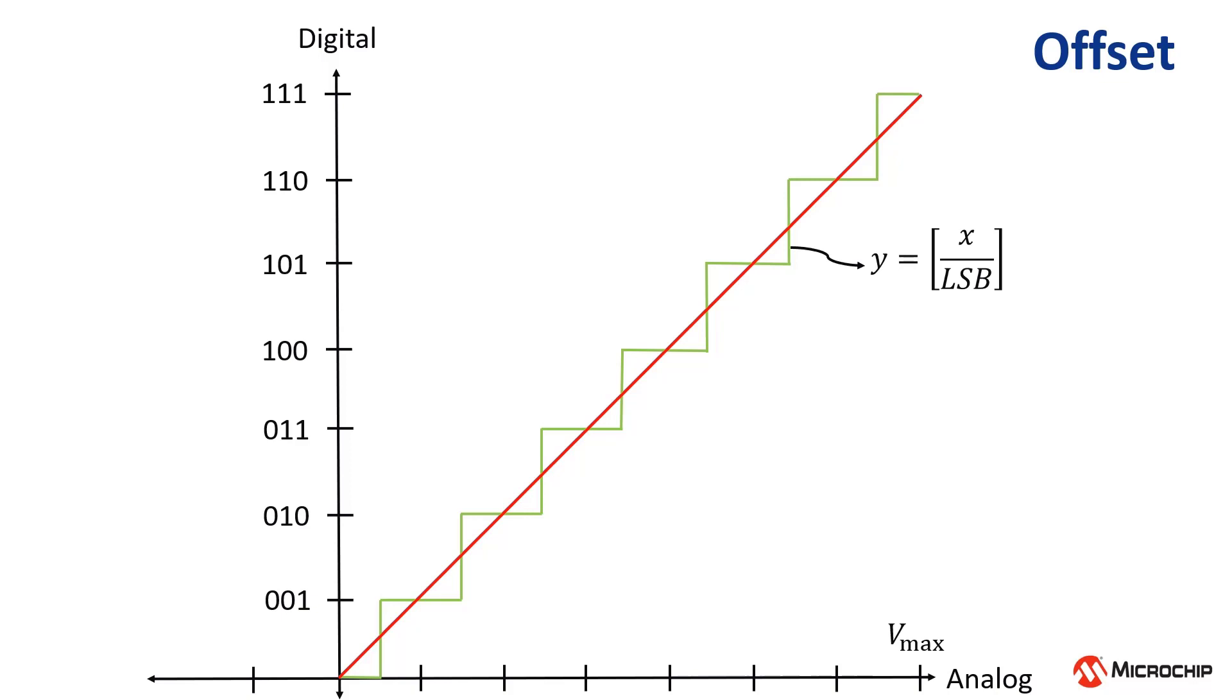Let's begin with the ADC transfer function. The red line represents a continuous mapping, and the green staircase function represents a digital output of an ADC. The transfer function is the analog input divided by the LSB size and voltage, rounding this result to the nearest integer. For more information, please see our quantization video.